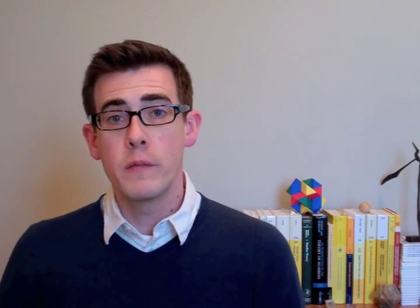My starting point is a result of David Boyd's from the early 80s. Suppose you have a polynomial in two variables, p. If we were to replace y with x to the n for some whole number n, then of course you now have a polynomial in just one variable, x. But if you take the Mahler measure of that and let n go to infinity, Boyd showed that it approaches the Mahler measure of the original two-variable polynomial.